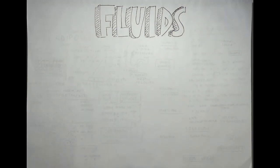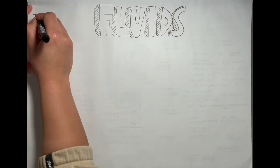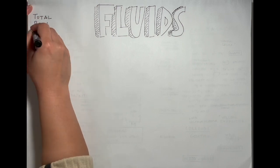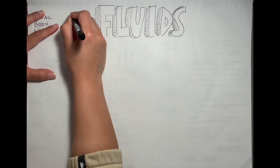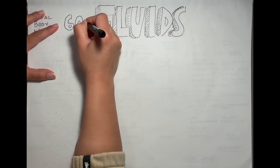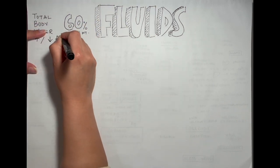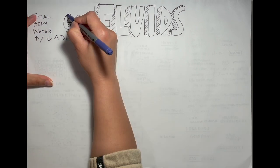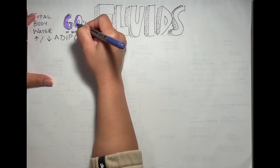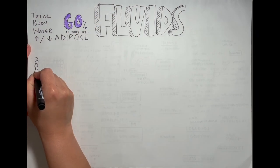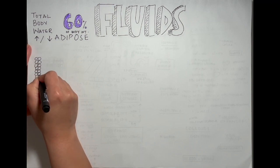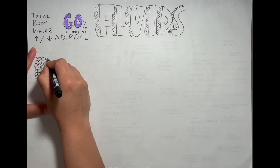Almost every patient ends up on fluids so let's talk about it. Majority of our body is made up of water, up to 60% of our weight consists of water. This can vary with adipose tissue, so females tend to have less water content about 50% whereas neonates have up to 75% because they lack adipose tissue.